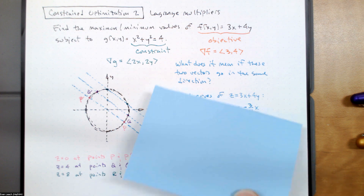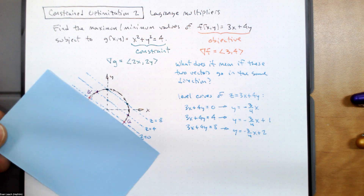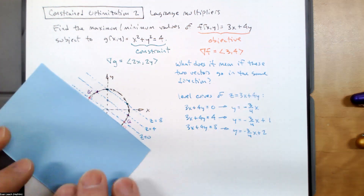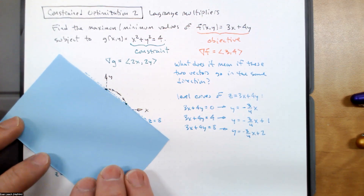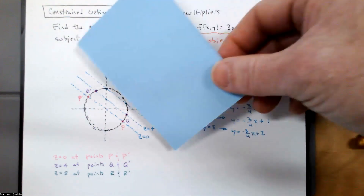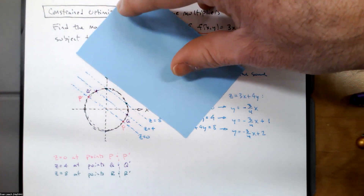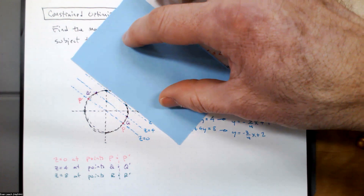My level curves are blue. At this level curve we get z = 0. As we move these level curves in this direction, we keep getting higher values of z: z = 0, z = 4, z = 8. So what are we looking for? Can I use this one? Is that level curve any good? No — it sits outside of the constraint, so we don't even get a value there.